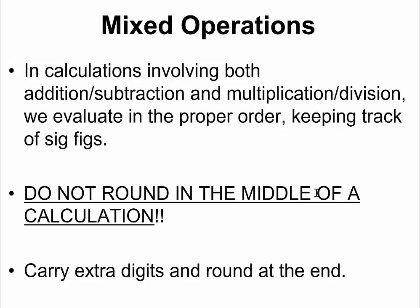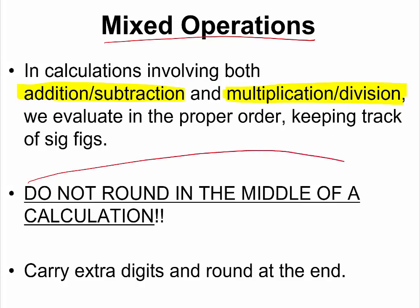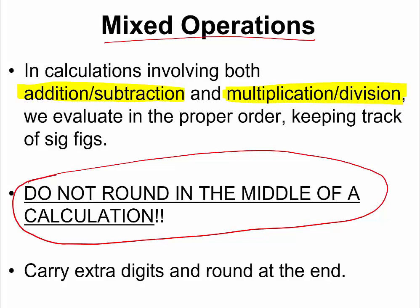Let us consider situations where we have addition or subtraction and multiplication or division within the same calculation. This is called mixed operations because addition and subtraction follow a different rule, and multiplication and division also follow a different rule. The very first thing you need to know is that you should never round your calculations before you get to the final answer. Always carry extra digits and only round the final answer.